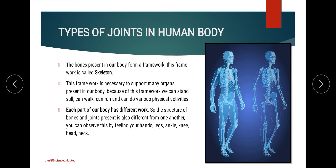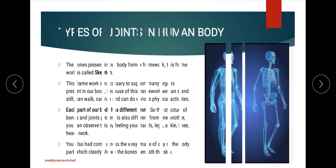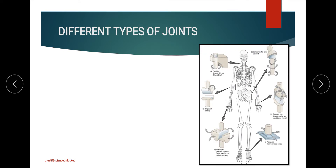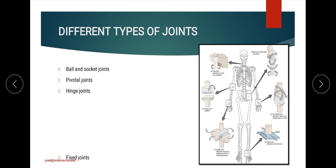Just as each part of our body has specific functions, the structures of the skeletal system also perform specific functions. Broadly, there are four categories of joints in our body: the ball and socket joint, the pivotal joint, the hinge joint, and the fixed joint.